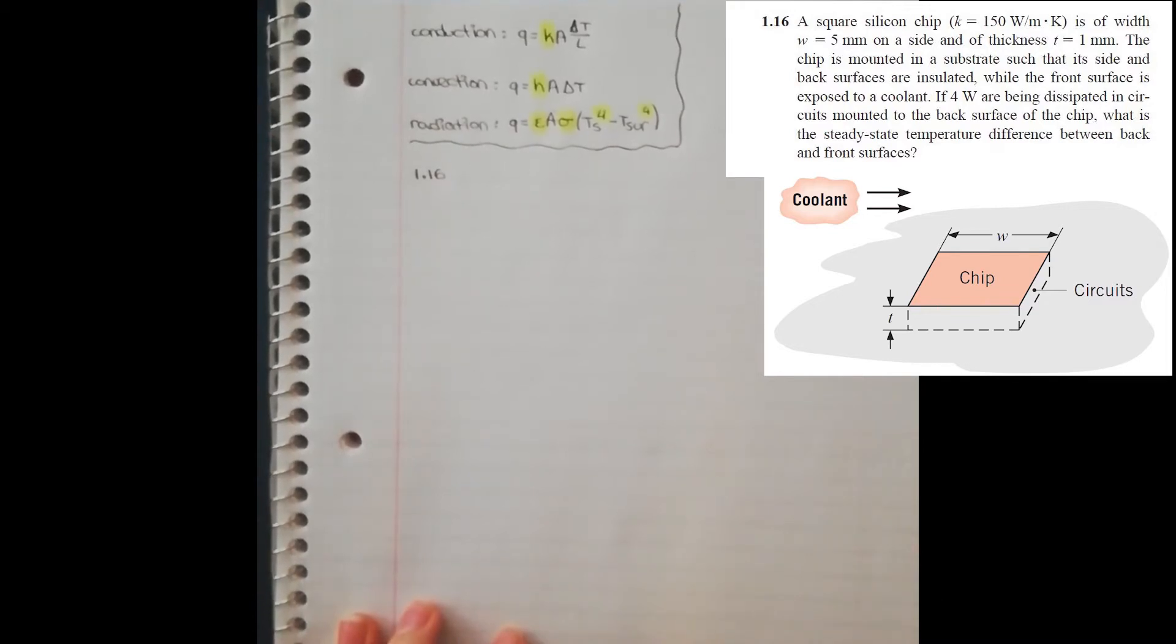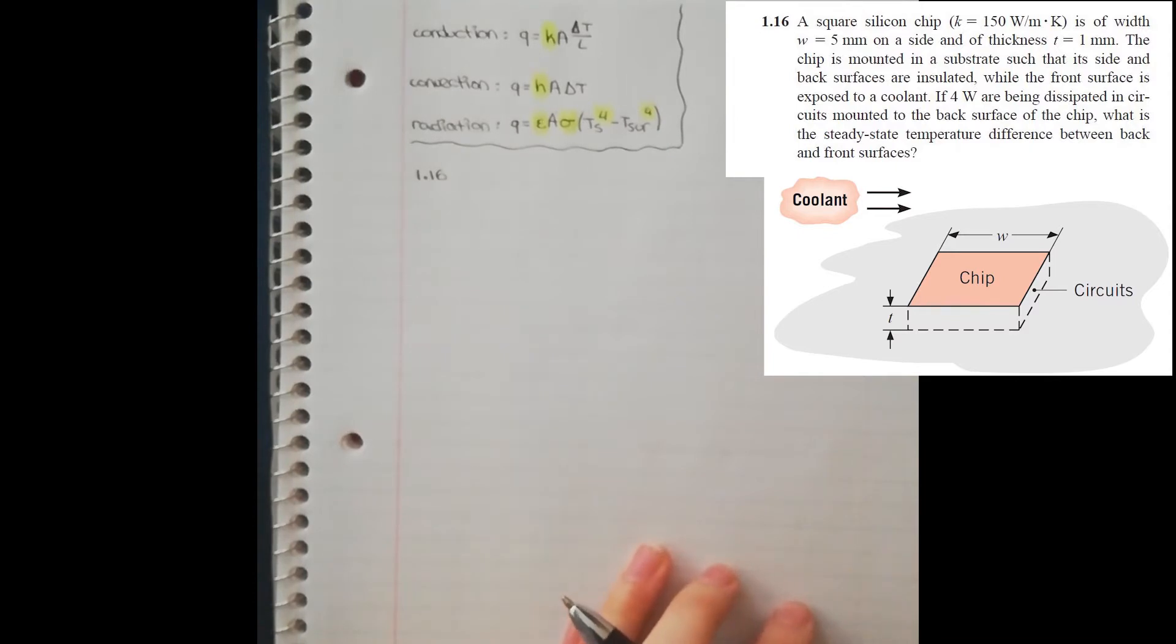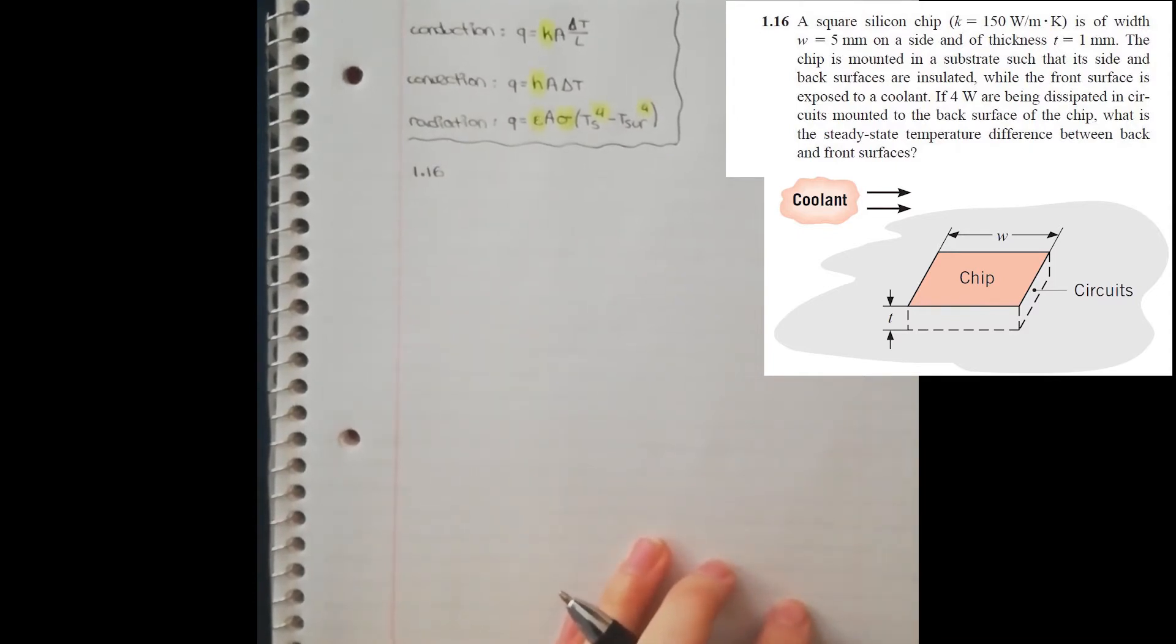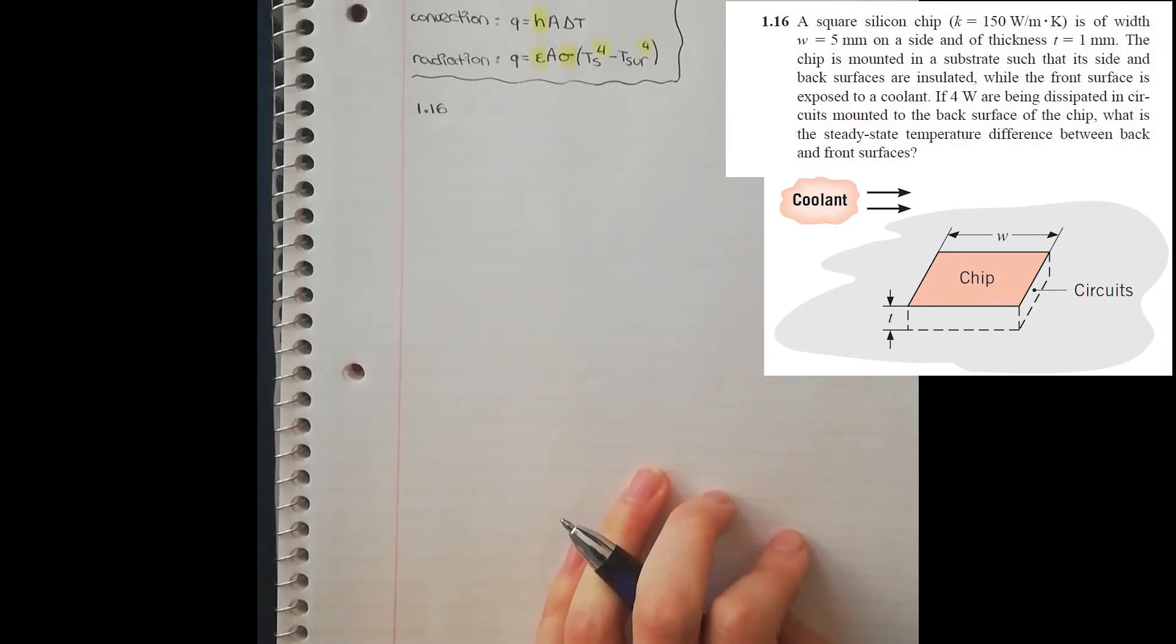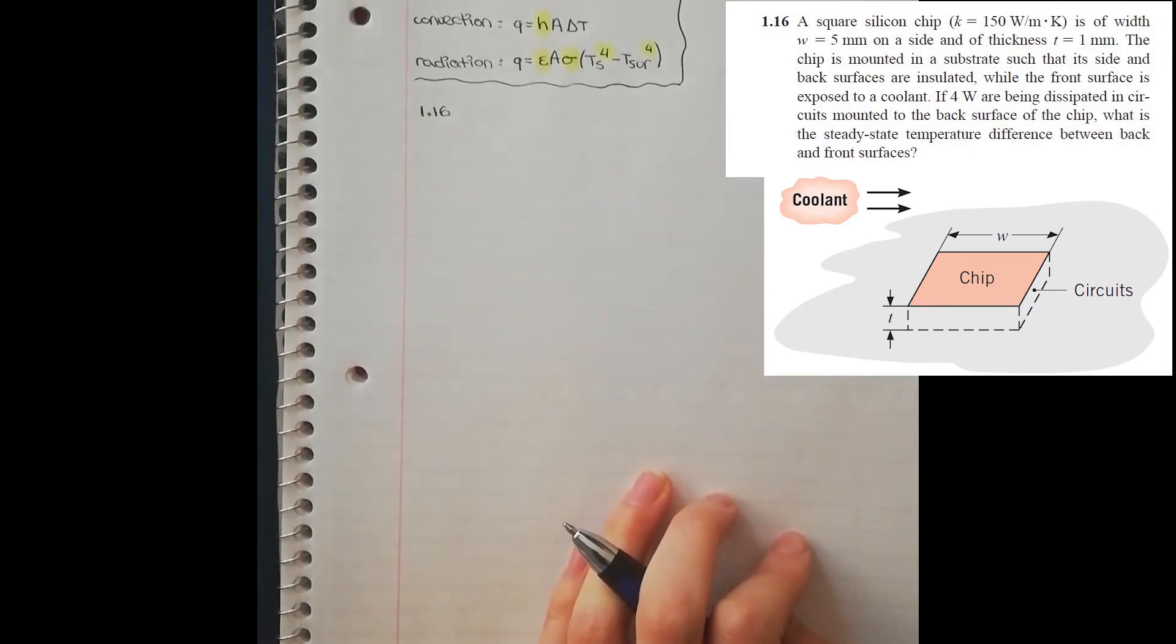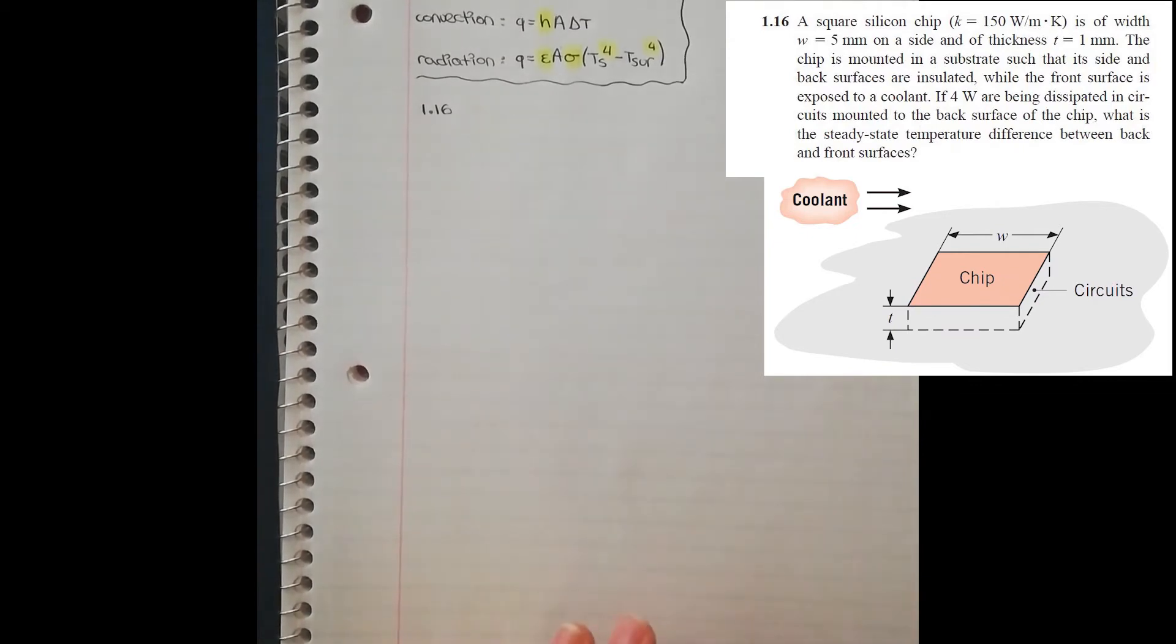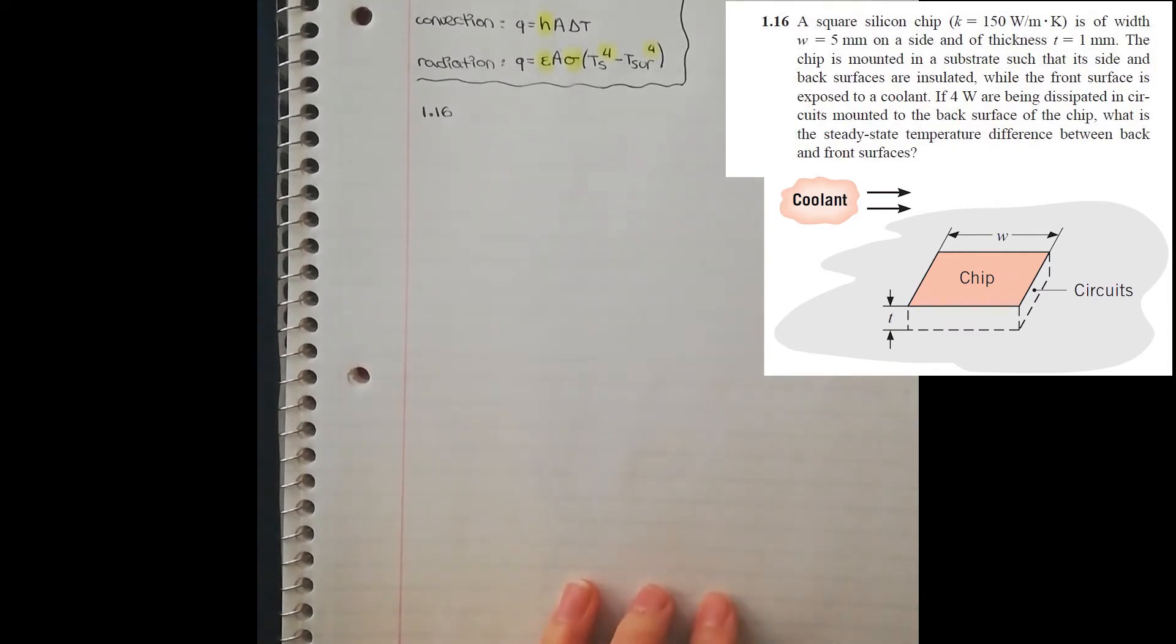In this problem, every surface is insulated except for the front of the chip. So whatever heat transfer is occurring must be happening there. A circuit that is on the chip is dissipating heat, so that heat needs to go somewhere. Conveniently, the front surface is exposed to the coolant, meaning the coolant can absorb the heat that the chip wants to release.